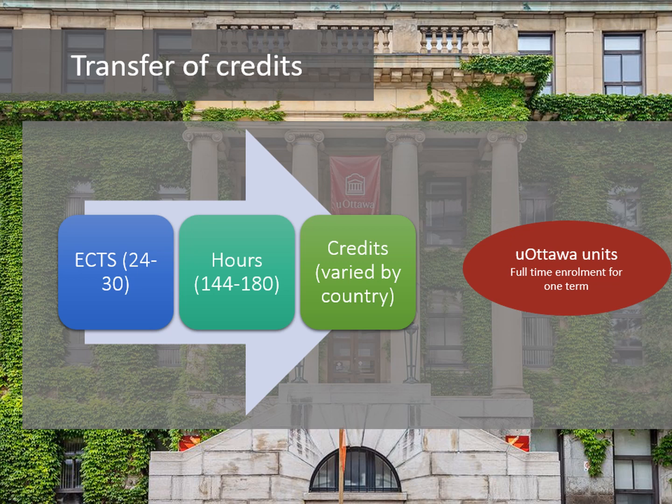Credit systems can vary from country to country, so you will need to know how to do the conversion. In Europe, for example, they use the European Credit Transfer System — units are called ECTS and all European universities use that system. The exact conversion is: one uOttawa unit is equivalent to two ECTS. Therefore, you divide the number of ECTS by two. A student wanting to take 15 units will need courses adding up to 30 ECTS; a student wanting 12 units will need courses adding up to 24 ECTS.